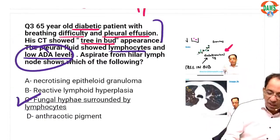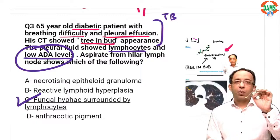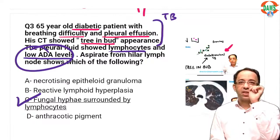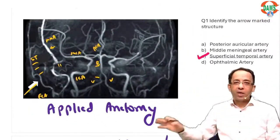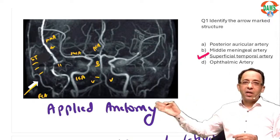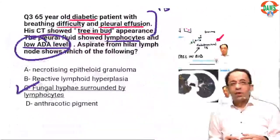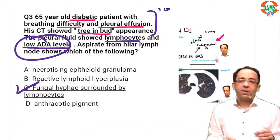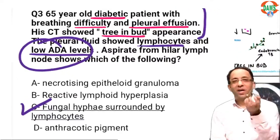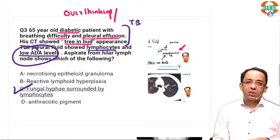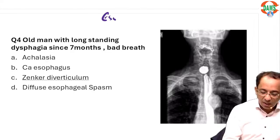A low ADA level does not go with TB. In pulmonology, if the ADA level is low, we are probably looking at a non-tubercular etiology. So the answer should point toward a necrotizing or caseating granuloma of non-TB origin. This is the twist: diabetes led to immunocompromise, leading to a fungal infection causing tree-in-bud appearance and pleural effusion. Everything else was pointing towards TB, but they changed the game with low ADA — the answer shifts to fungal etiology.